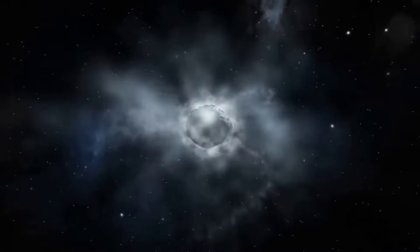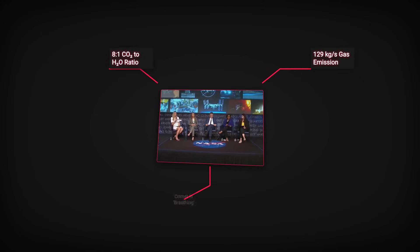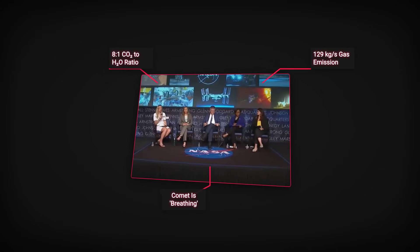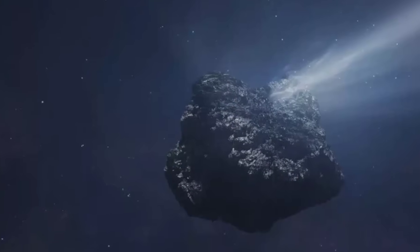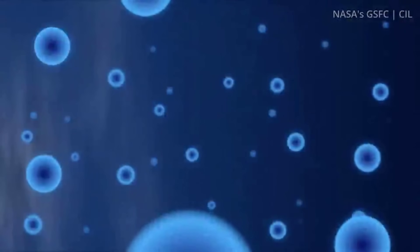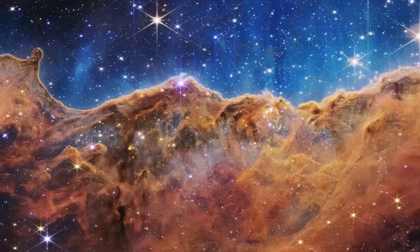The comet is breathing, but not like any comet seen before. The numbers echo through the anomaly review: 8 to 1 carbon dioxide to water, 129 kilograms per second, activity starting in the deep freeze of the outer solar system. The chemical riddle only deepens as the spectra are released, setting the stage for a new kind of mystery.